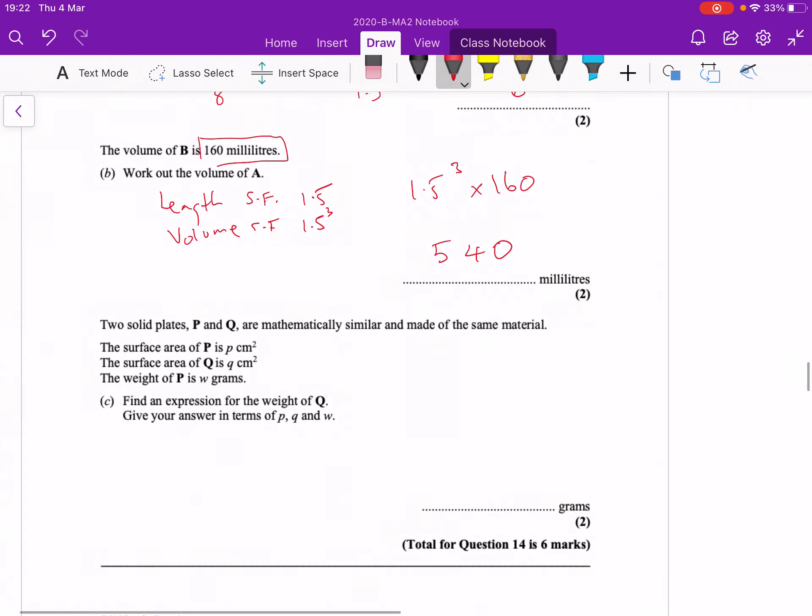Part C, again mathematically similar, the surface area have got certain values in there. So the area scale factor to go from P to Q is going to be Q over P. Now that is the area scale factor.